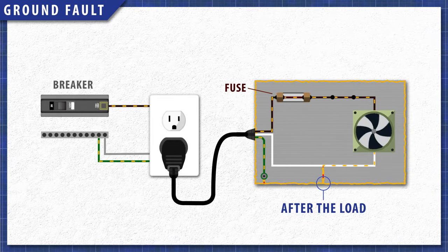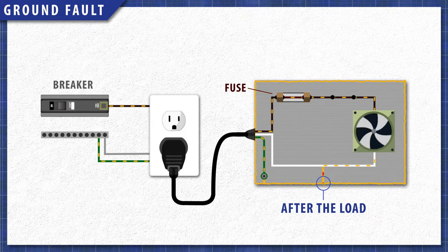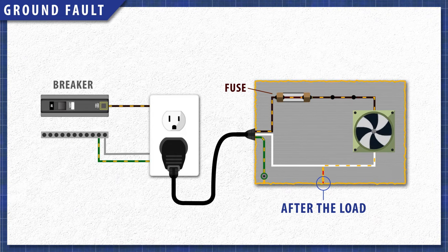Now if the ground fault happens after the load, there is still resistance in the circuit, so the breaker might not trip. The appliance might still be functional, but this depends on the component affected.